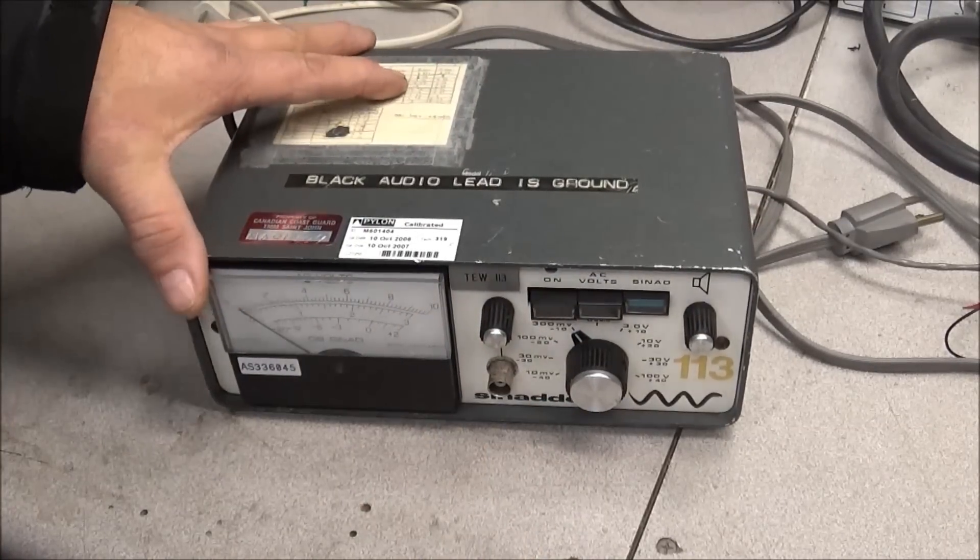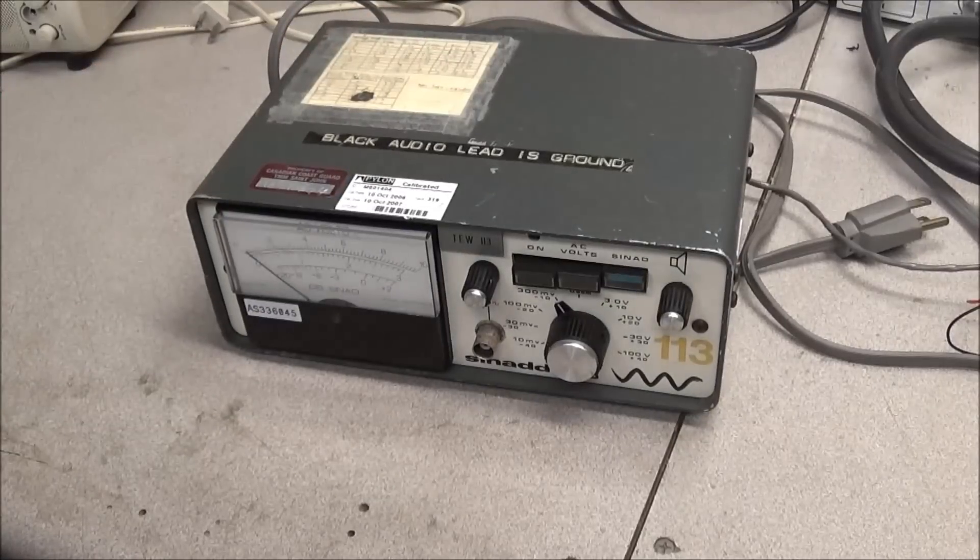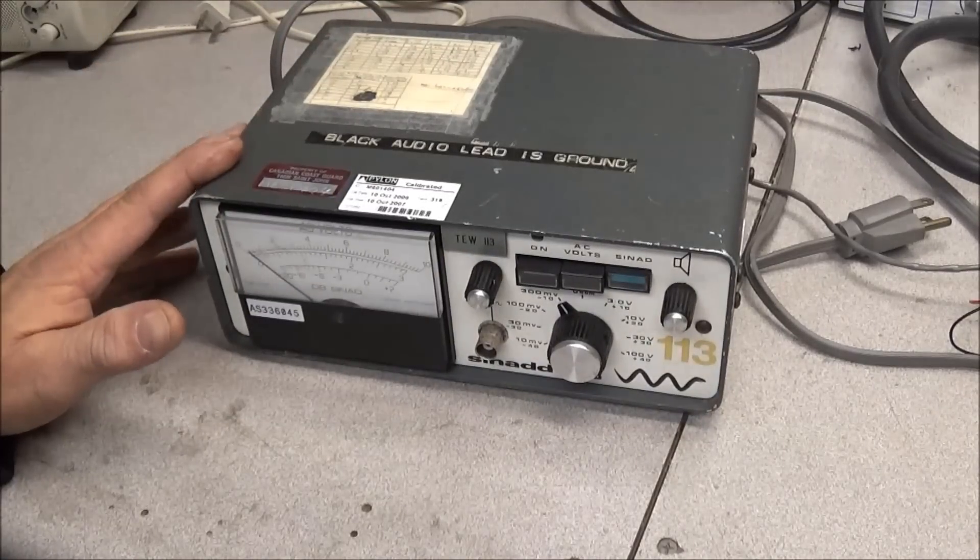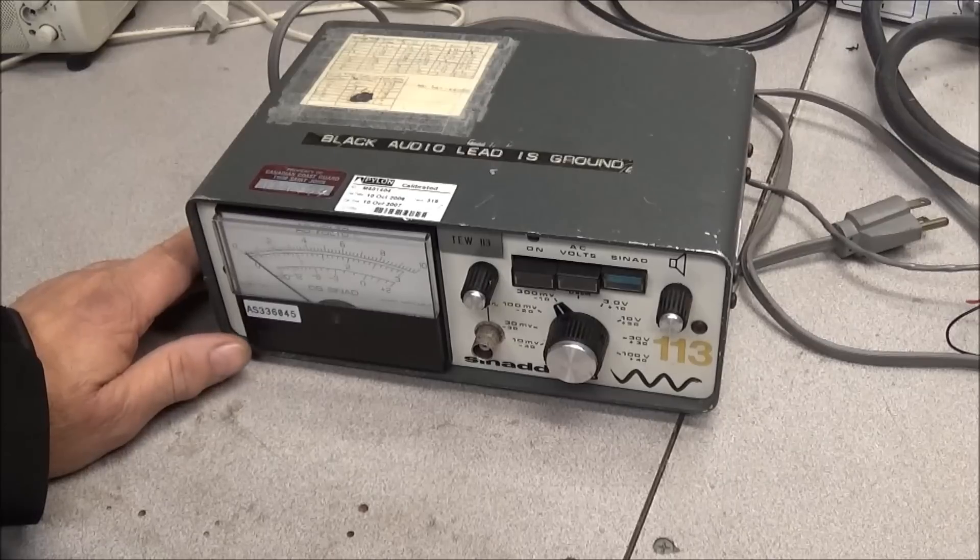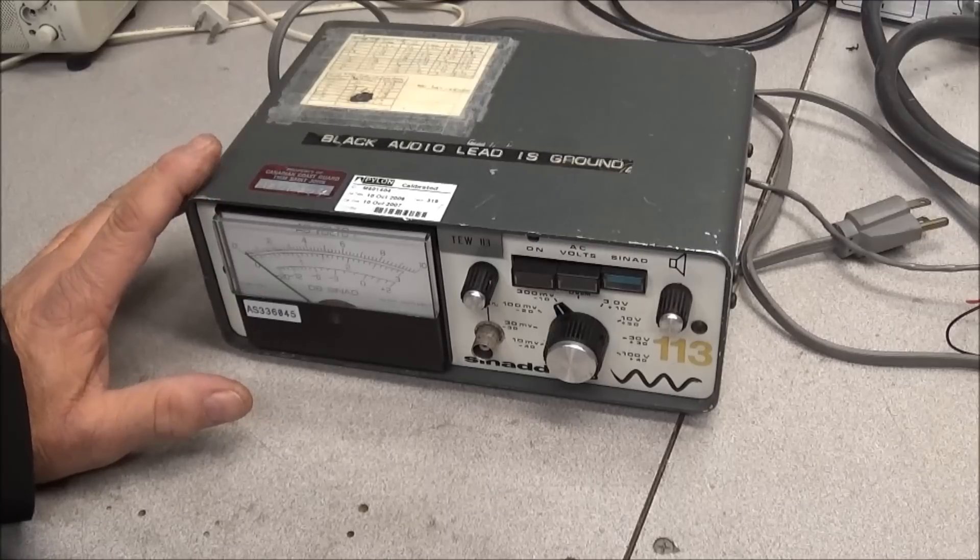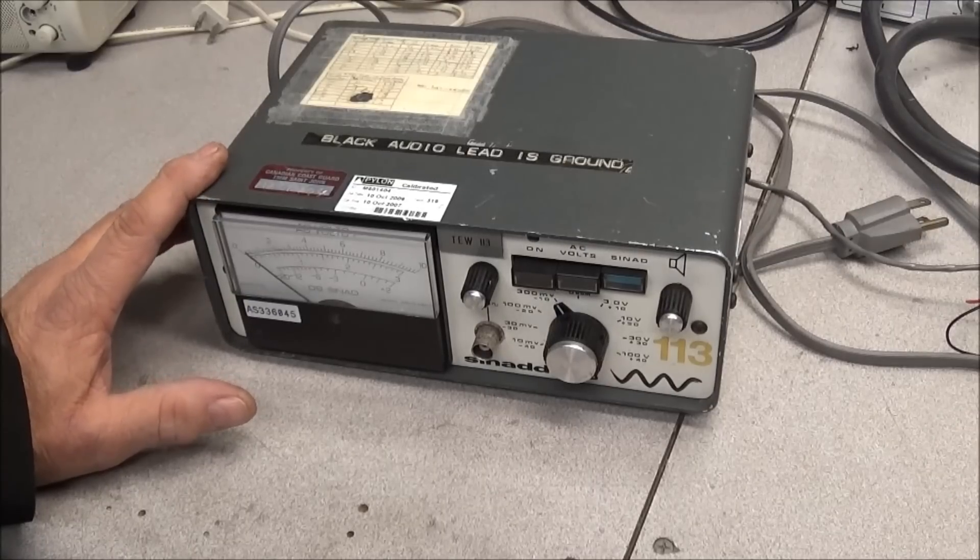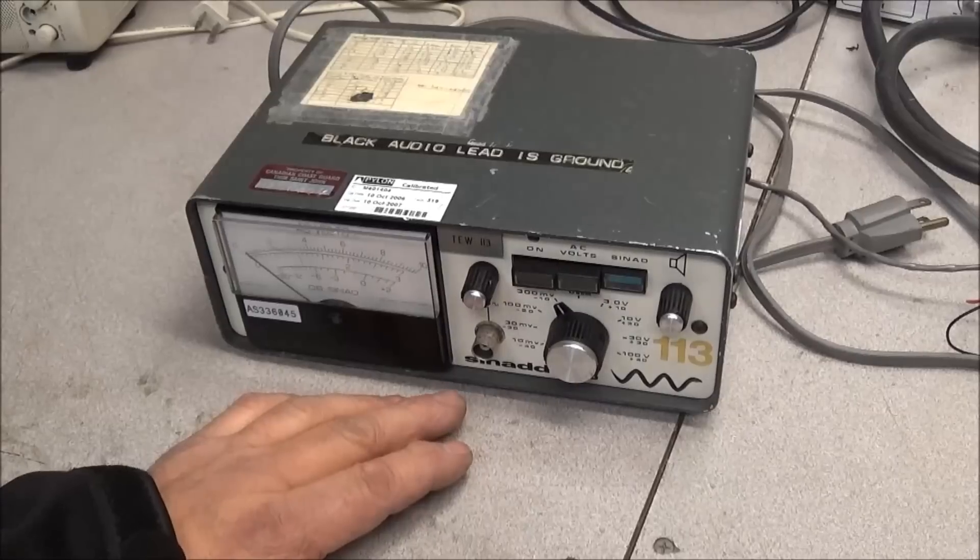This also shows AC volts. Now back in the day we used to use vacuum tube voltmeters to set the receiver, to get the receiver peaked out. Now the SINAD, you know, signal to noise and distortion.